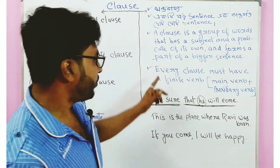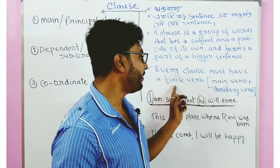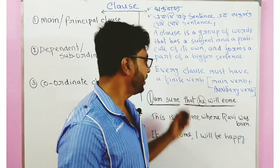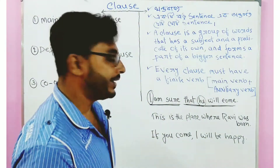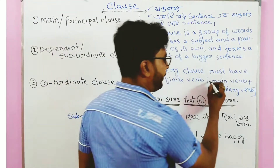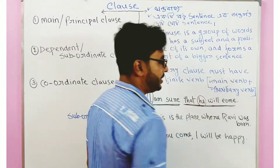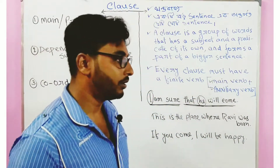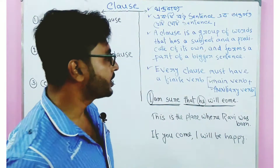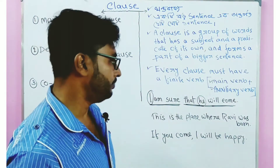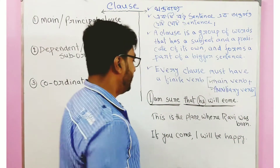Next point: every clause must have a finite verb. A finite verb can be a main verb or an auxiliary verb — such as was, shall, will, be, do, does, did — these are examples of auxiliary verbs.